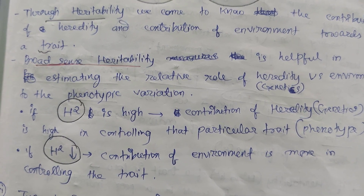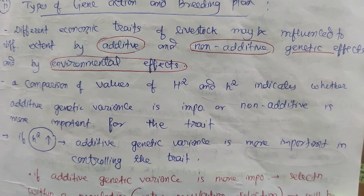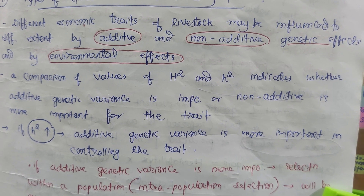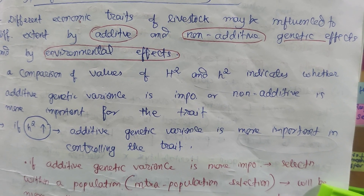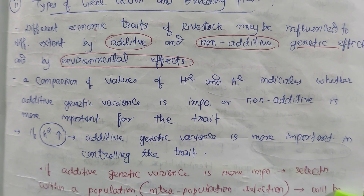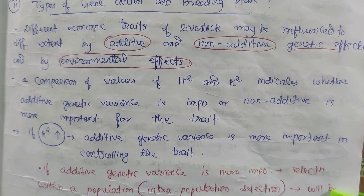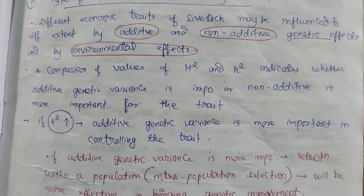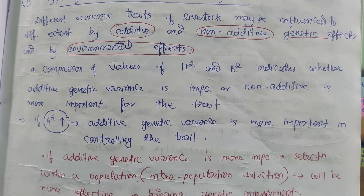But if broad sense heritability is less, then the contribution of environment is more in controlling the trait. The second point is type of gene action and breeding plan. There are many types of gene actions — additive gene actions, non-additive gene actions — and environmental effects. These have an effect on the expression of traits, meaning different economic traits of livestock may be influenced to different extents by additive and non-additive genetic effects and environmental effects. A comparison of broad sense heritability and narrow sense heritability indicates whether additive genetic variance or non-additive genetic variance is more important for the trait.